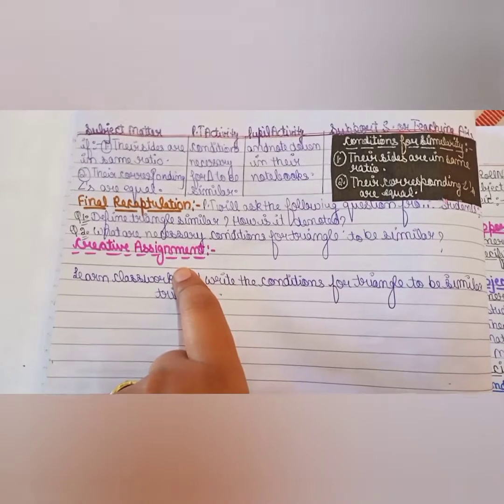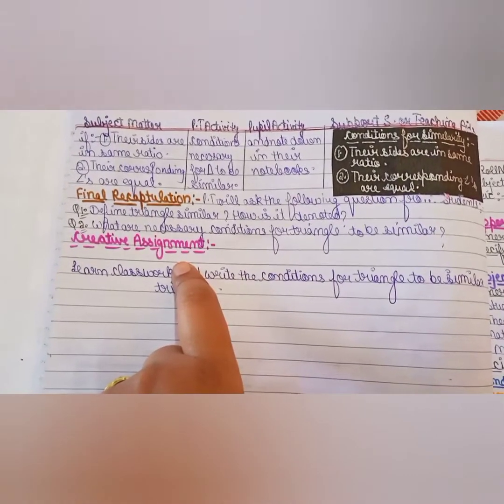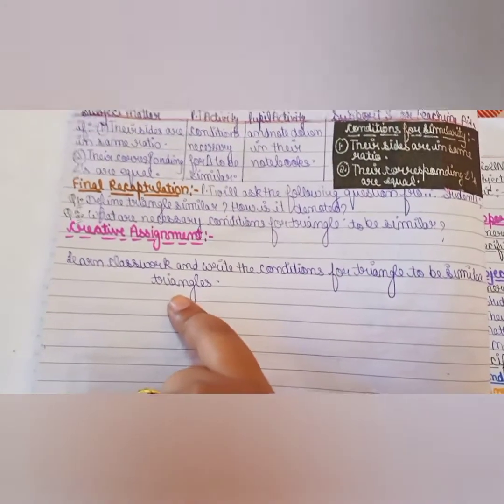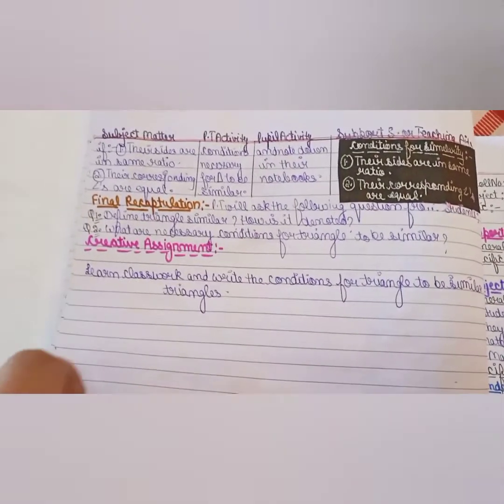Now it's a creative assignment. You can also say the home assignment, which you have to give for homework. Learn classwork and write the conditions of the triangle to be the similar triangle. What are the conditions?